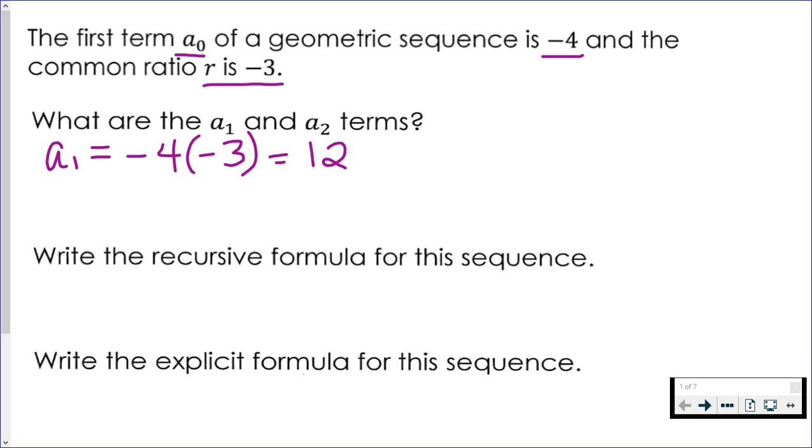To get to the second term, or term two, you take term one, and you multiply it by the common ratio again. So term two is negative 36.